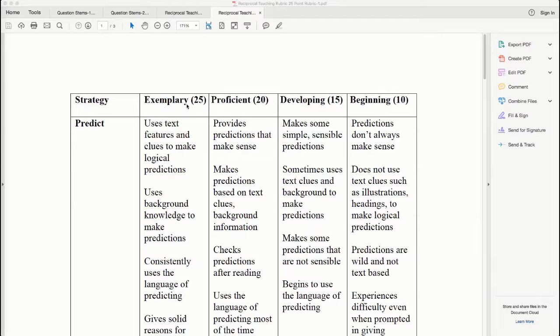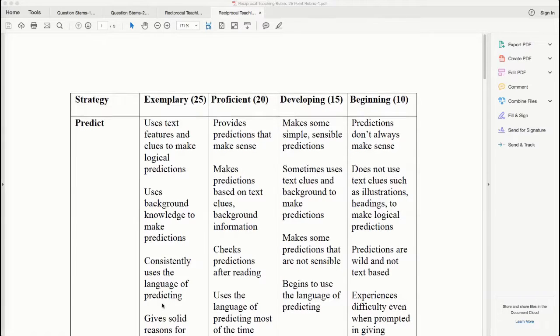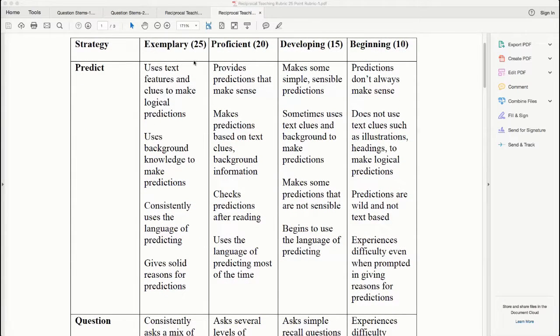So for an exemplary discussion forum post in the predicting place forum, you would use these criteria to get 25 points. For proficient, these are the types of posts you would be posting in the prediction place forum.